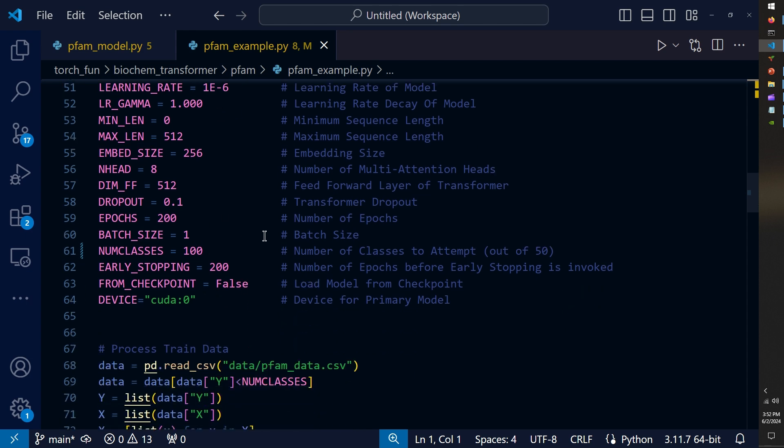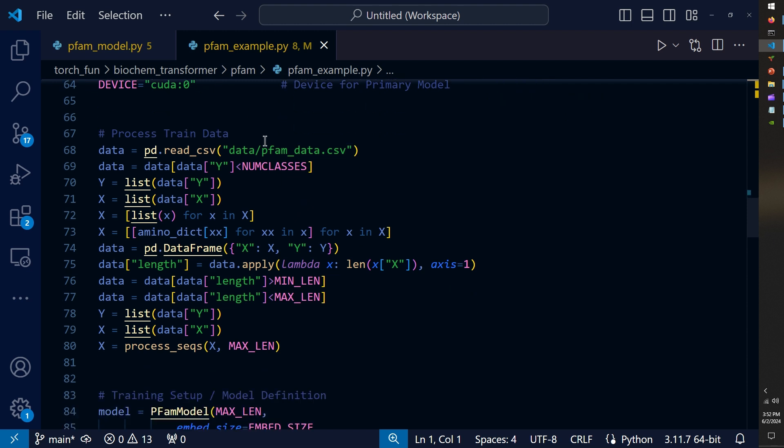Then I moved directly into preprocessing the data. This in sequence applies the dictionary of tokens for tokenization as well as the preprocessing function for the input data to get everything to the appropriate length via padding or truncation. This line in particular defines how many classes we're going to be using for the current experiment. For the last experiment, this truncates the data to the top 100 classes by the number of samples.